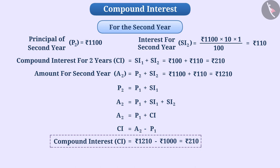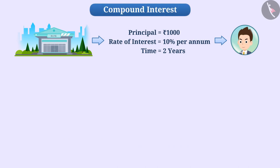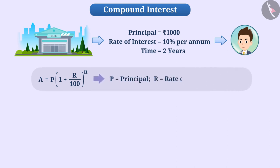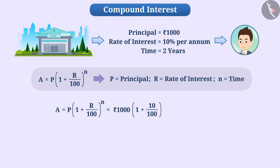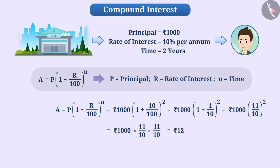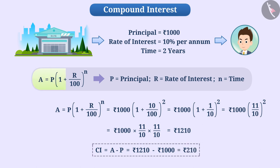To calculate compound interest we use the formula: A equals P multiplied by (1 + R/100) raised to the power n, where P is principal, R is rate of interest, and n represents the time period. From the given example, A equals 1000 × (1 + 10/100)² equals rupees 1210, and CI equals A minus P equals rupees 1210 minus rupees 1000, equals rupees 210. We will learn more about this formula in the next video.